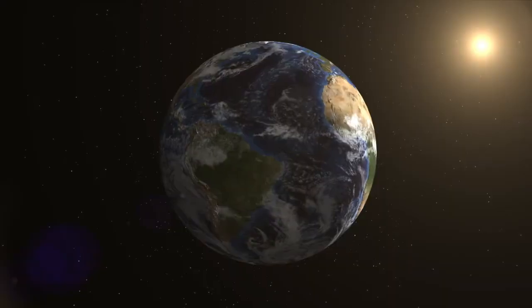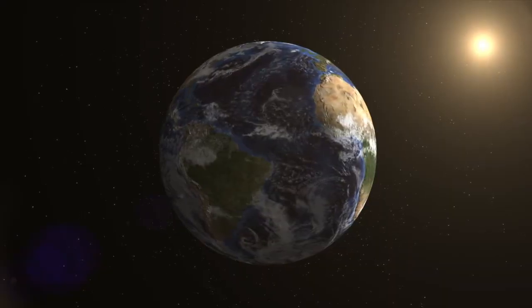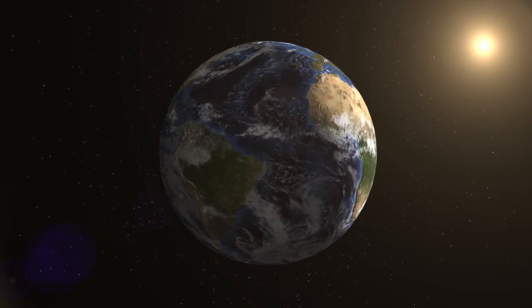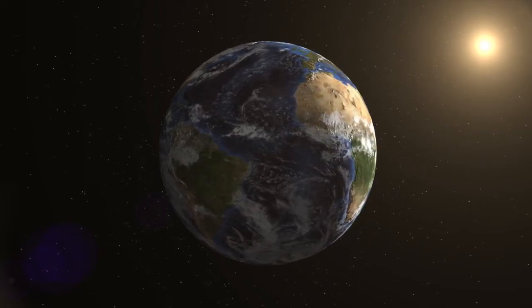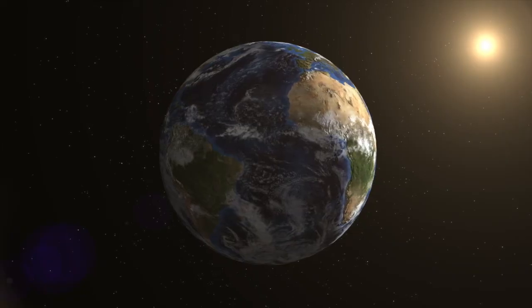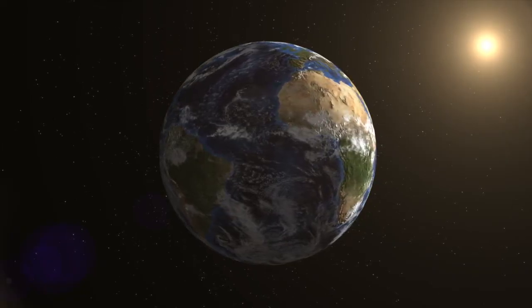As the Earth rotates, the side facing the sun receives warmth and light. This is the daytime. The side facing away from the sun will be cooler and darker. This is the nighttime.